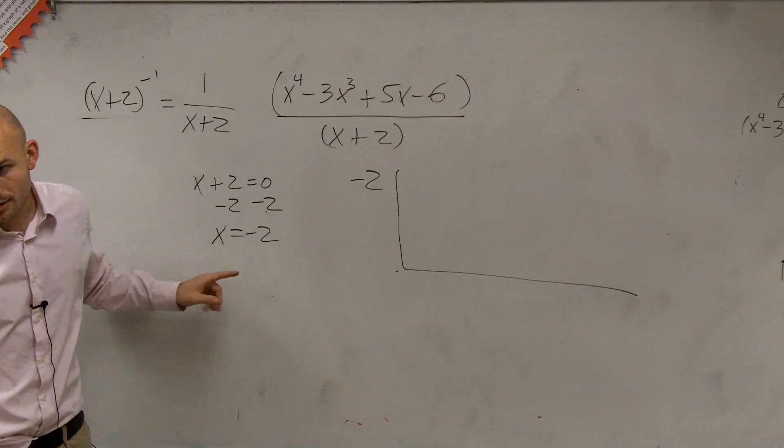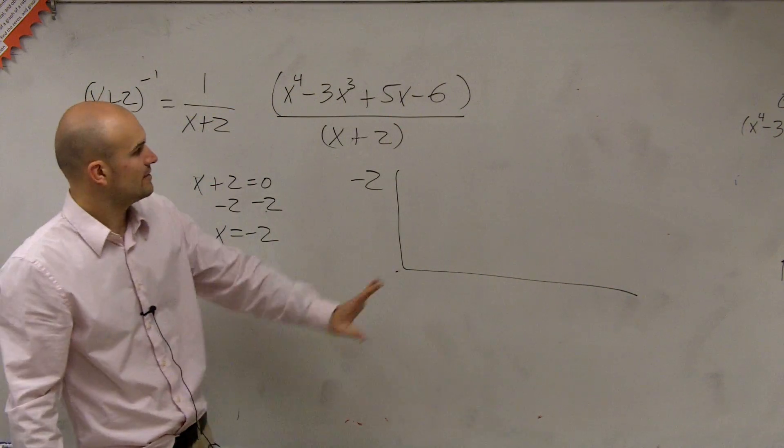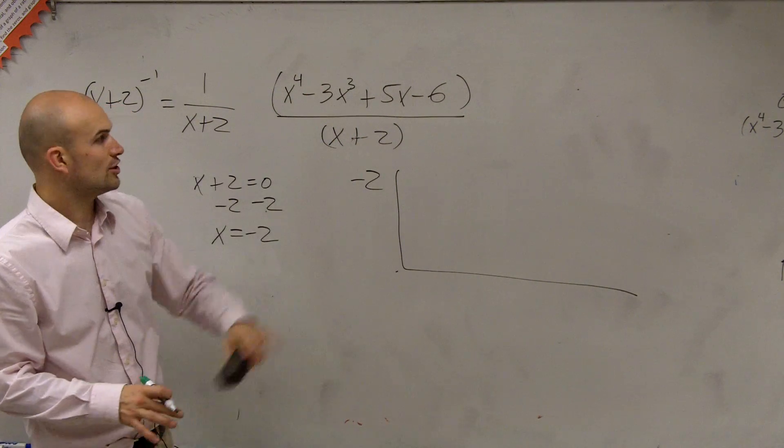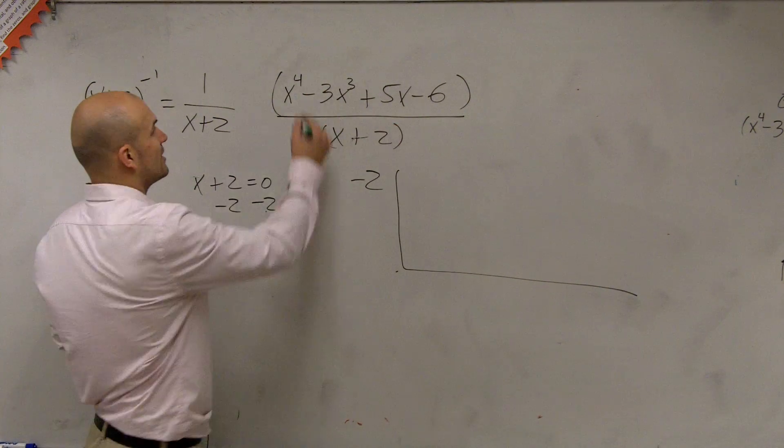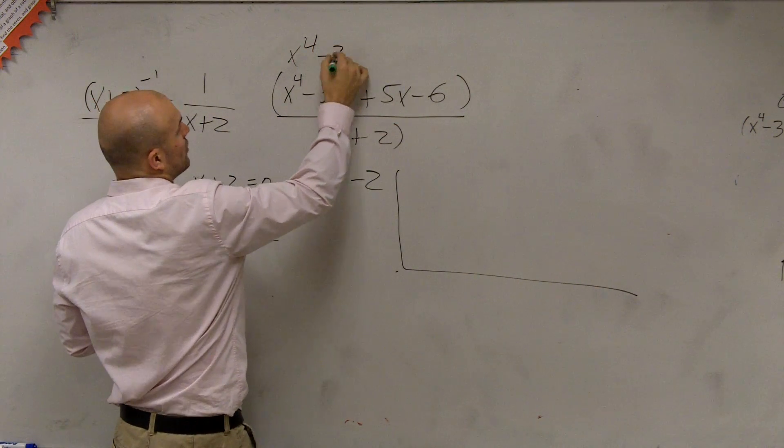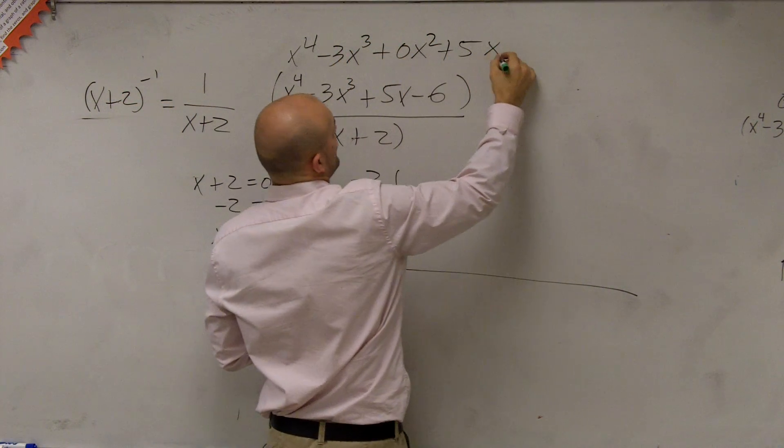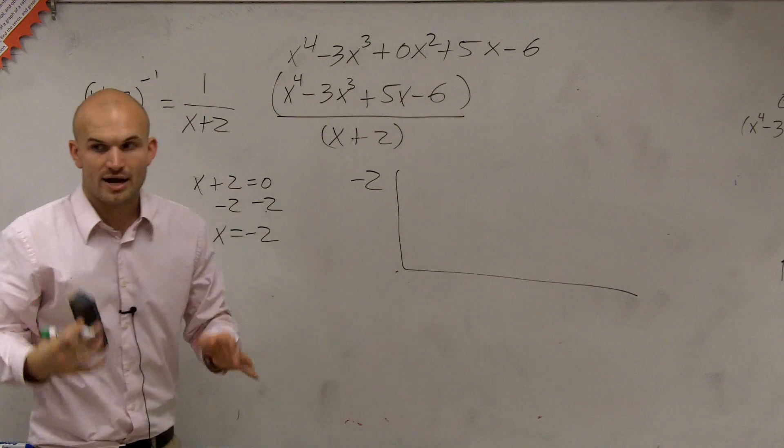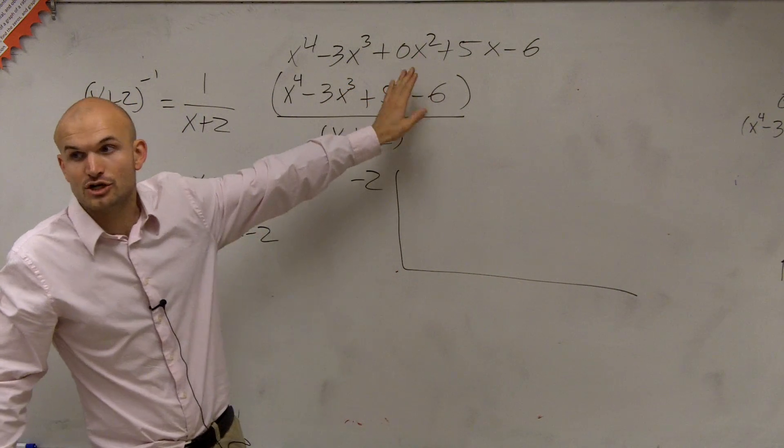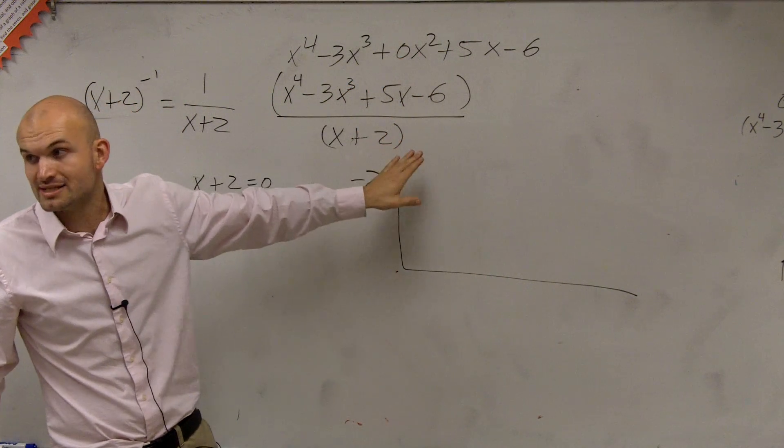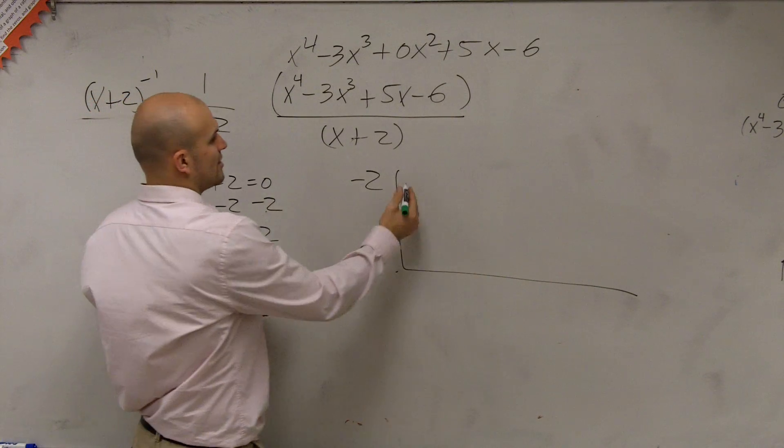Because remember, you've got to set it equal to 0. We'll work on that for now. Then we take the coefficients of each term. Notice we're missing an x squared, so we can rewrite this as x to the fourth minus 3x cubed plus 0x squared plus 5x minus 6. Remember, whenever you're missing a term, you've got to make sure you include that 0 as its coefficient.